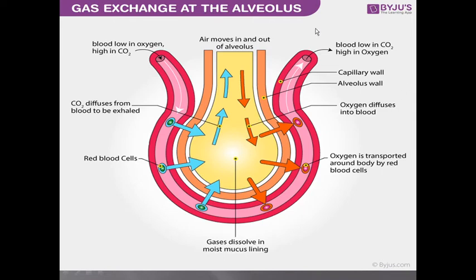Let's look at how gas exchange takes place at the alveolus. Air enters into the alveolus, which is filled with oxygen. The air entering the lungs contains a higher concentration of oxygen and a low concentration of carbon dioxide. Oxygen diffuses into the bloodstream and combines with hemoglobin in the red blood cells, forming a compound called oxyhemoglobin. Oxygen is then transported around the body by the red blood cells.